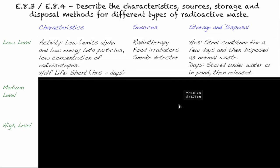Low level has two major components of its definition. You have to say that it has low activity and a short half-life. Activity means it has a low concentration of radioisotopes. In other words, there aren't a lot of radioisotopes in the sample. Most of the ones that are in there are actually stable. And the ones that aren't, the few radioactive ones, will emit alpha particles and low energy beta particles.